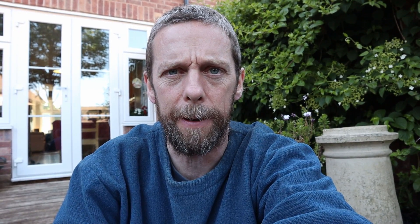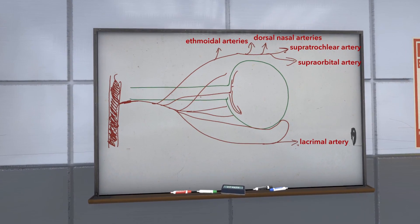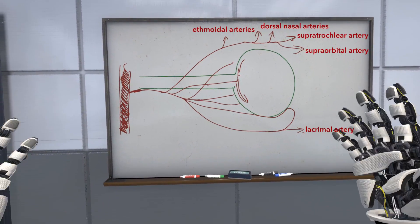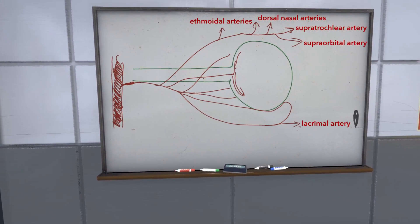There are also zygomatico-temporal and zygomatico-facial arteries running out toward the zygomatic region. As these arteries run through the orbit, they give off branches to the various extraocular muscles within the orbit — the muscles that move the eyes. So the ophthalmic artery supplies blood to the eyeball, to the structures of the orbit, and to the skin of the forehead and structures around the eye.